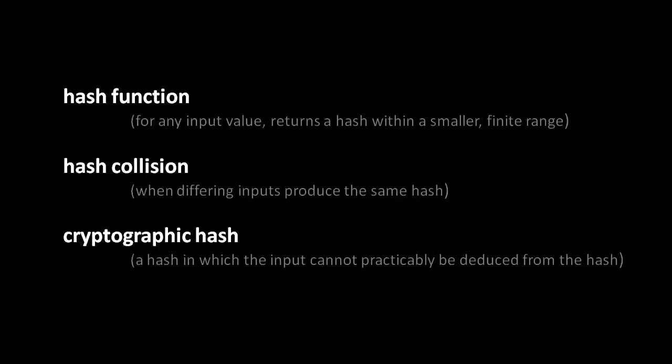In an earlier unit, we explained hash functions. A hash function is a function which takes any input value and returns a generally smaller value within a finite range called a hash. Most commonly, a hash function is used like a kind of sieve that says these inputs go into this bucket, these inputs into that bucket, and most commonly, the intention is for input values to get more or less evenly distributed between buckets.